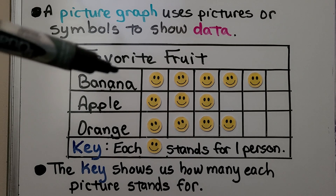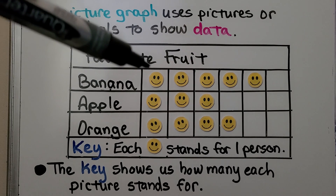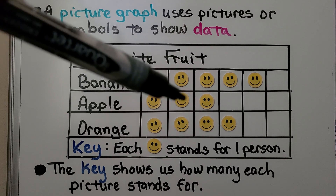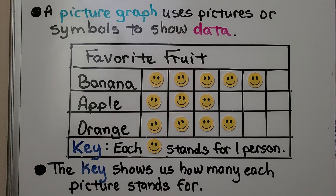We can see banana had five people say they like banana, apple had three, and orange had four.